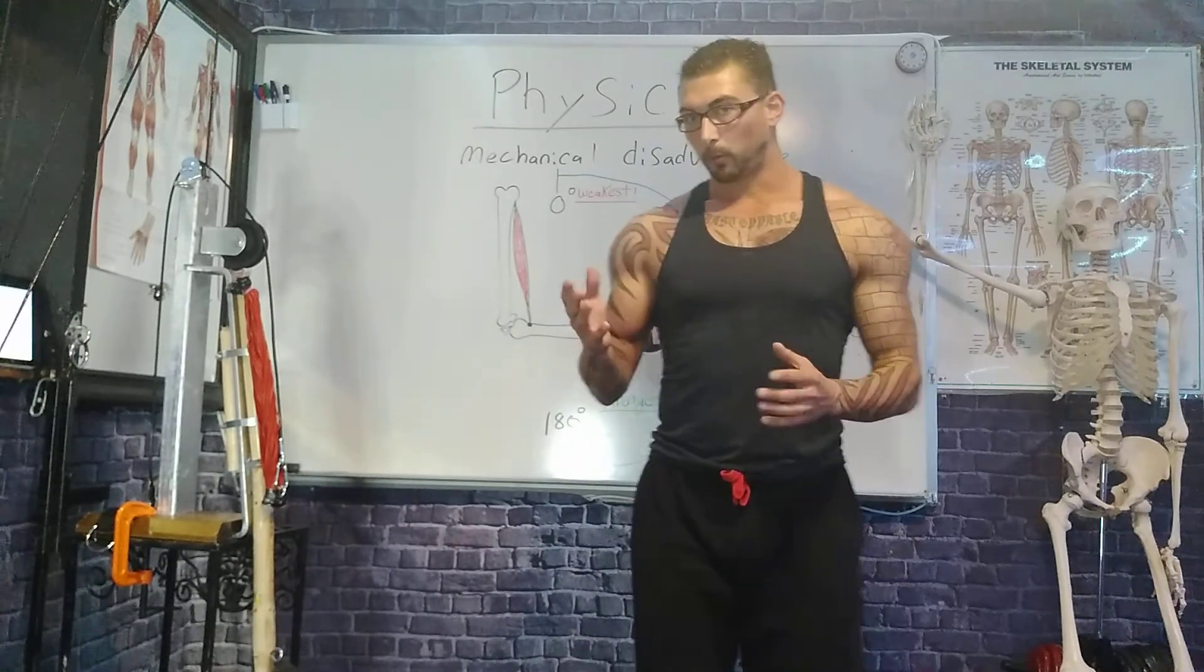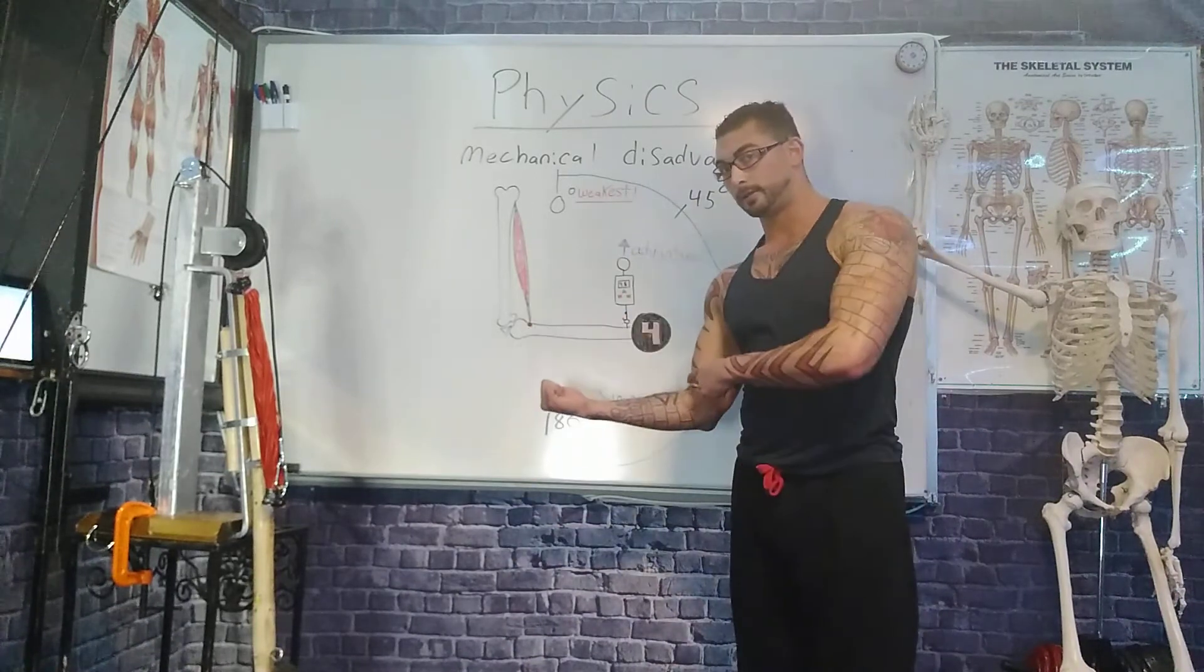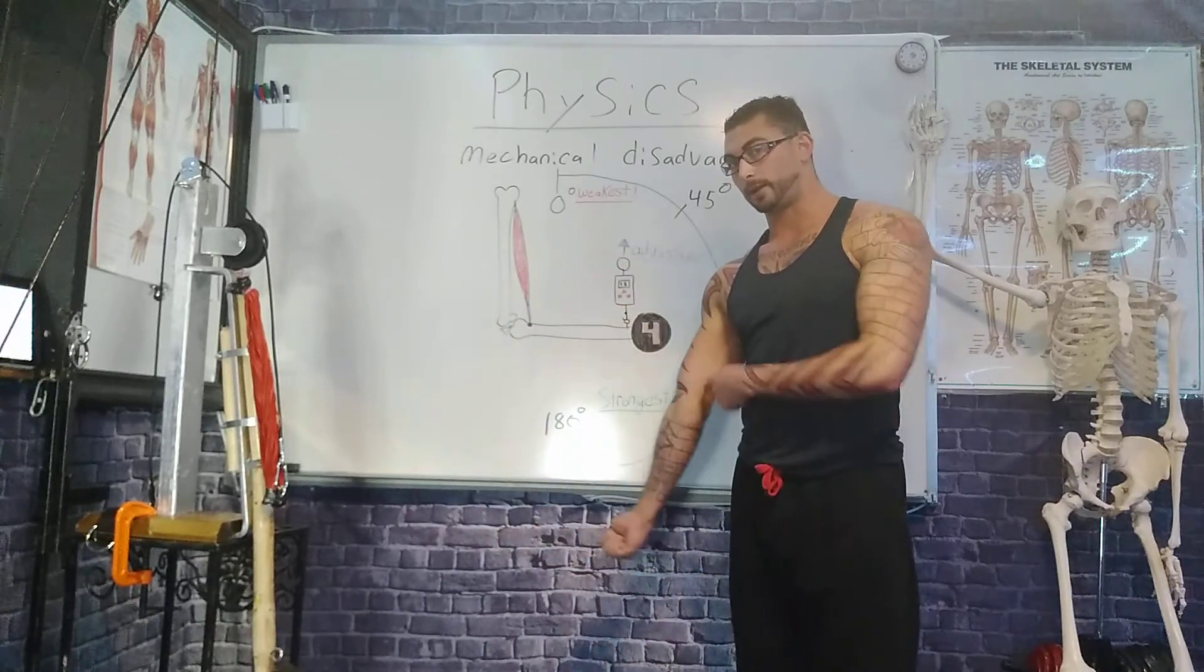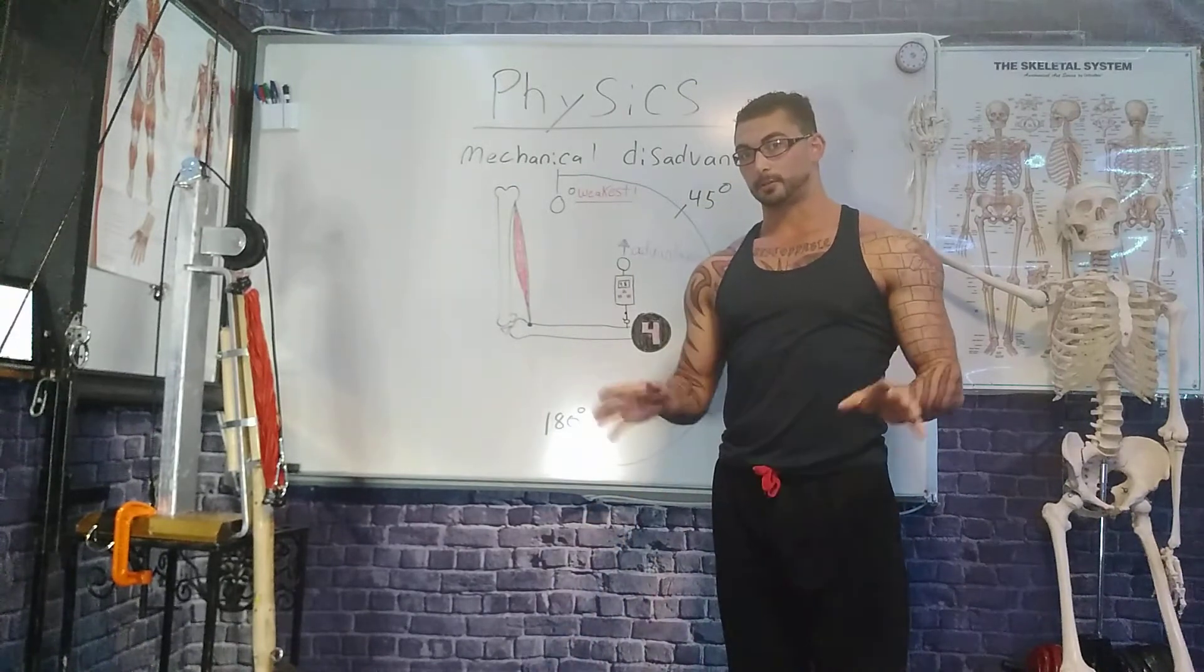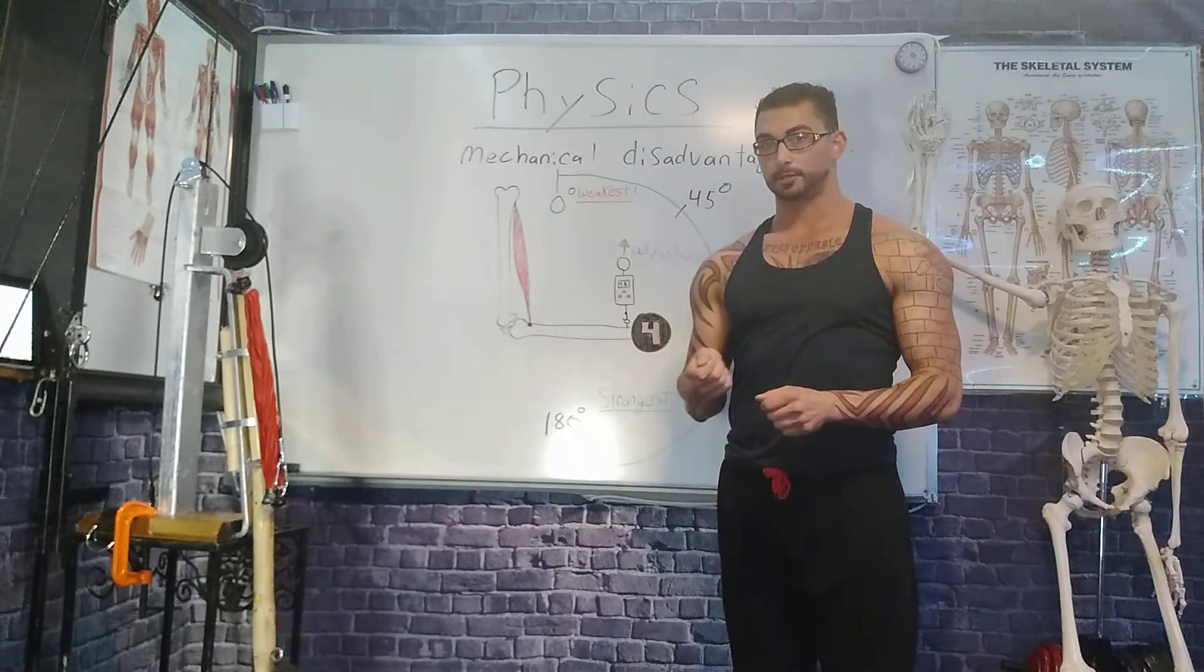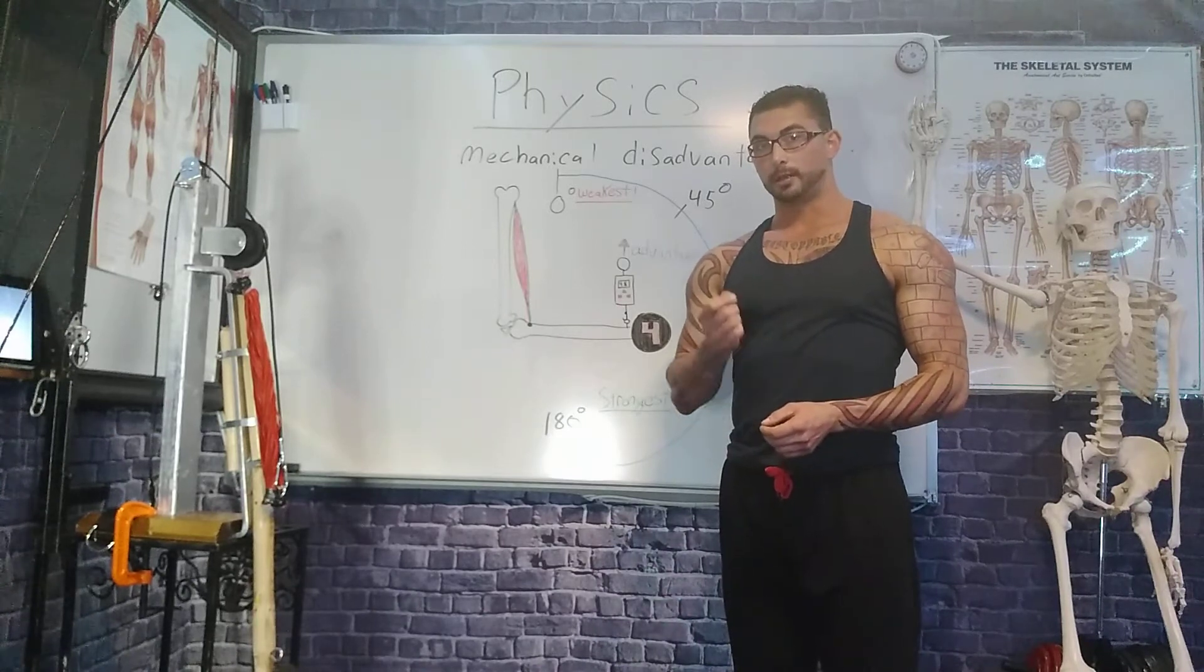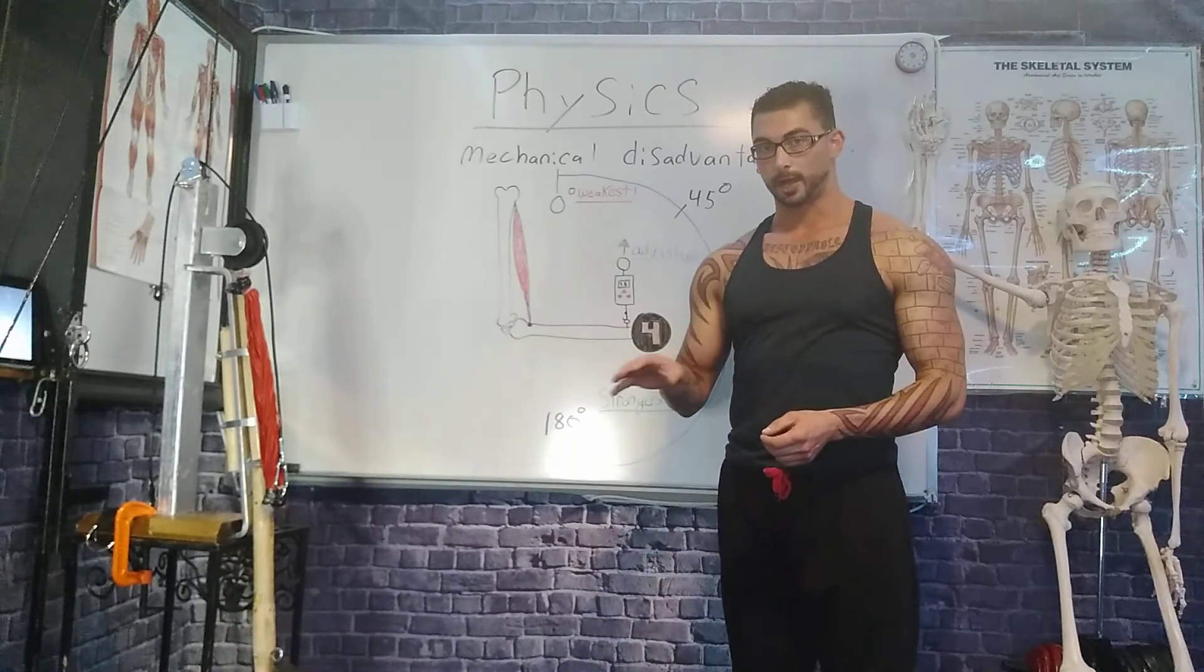Now, when the muscle is pulling straight up, mechanical advantage. It gets easier. All the way down here, mechanical disadvantage. True for every muscle in your body. A muscle can only pull from insertion to origin. Remember the refrigerator. True for every muscle in your body. No exceptions to these rules.